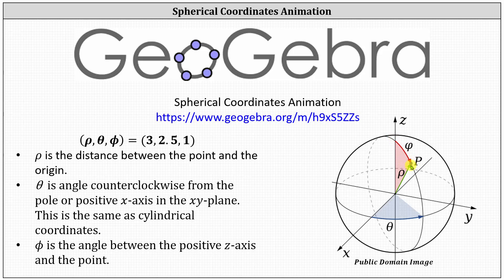This defines the point P. Now we'll take a look at the point 3 comma 2.5 comma 1 using the GeoGebra animation. And here is the URL for the animation.